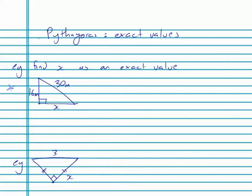Looking at this first question, find x as an exact value. Now they've named a short side x, but we know we can call that a if we want to, or x if we want to, it doesn't matter.